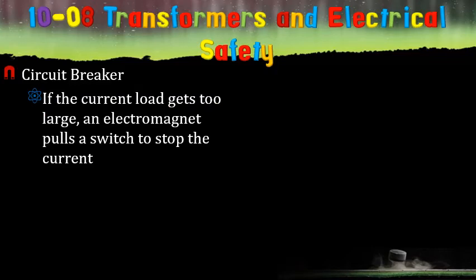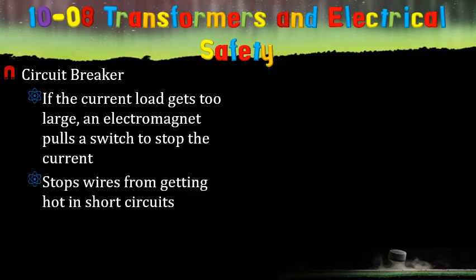A circuit breaker is another safety device. If the current load gets too large, there's a little electromagnet that pulls a switch open and it stops the current. And what it does is it stops the wires from getting hot and short circuits. If there's a lot of current, there's a little bit of resistance in the wires and it can actually produce enough heat to melt stuff and start fires.